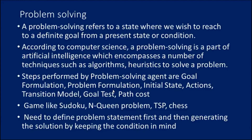Next comes problem formulation. It is the most important step of problem solving, which decides what action should be taken to achieve the formulated goals. There are five components involved: initial state, which is the starting state of the agent towards its goal; actions, which is the description of possible actions available to the agent; transition model, which describes what each action does; goal test, which determines if the given state is a goal state; and path cost, which assigns a numeric cost to each path that follows the goal.